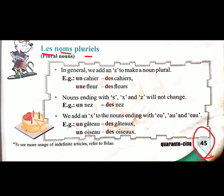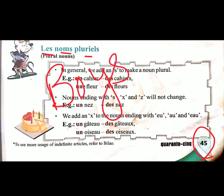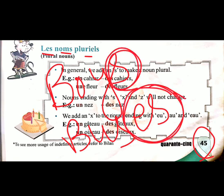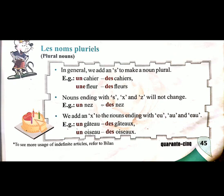Now on the same page 45 there is another topic: les noms pluriels — plural nouns. How do we convert a noun into plural? In English we generally add 's,' though sometimes we add 'es,' such as buses. In French there are three rules for making a noun plural.